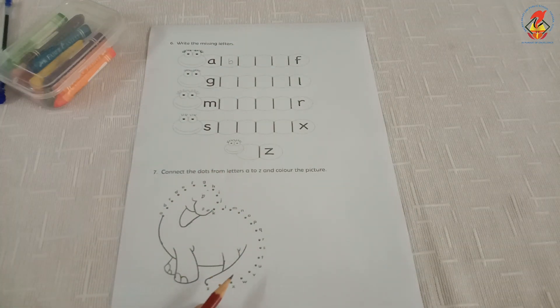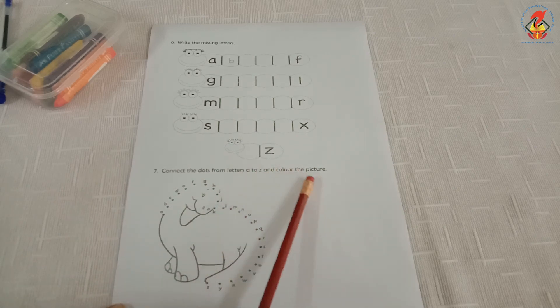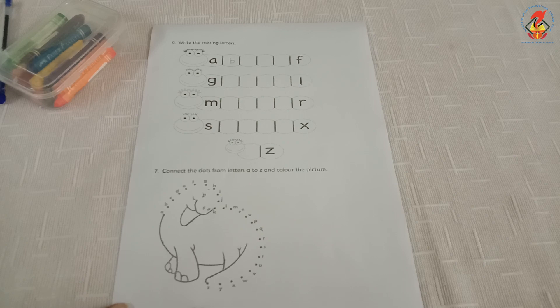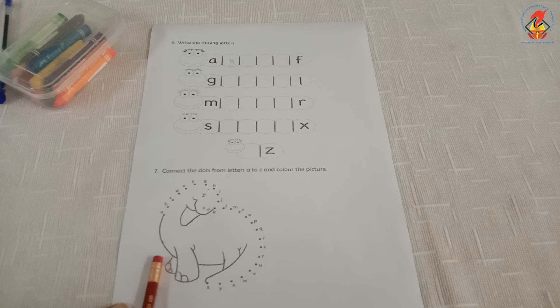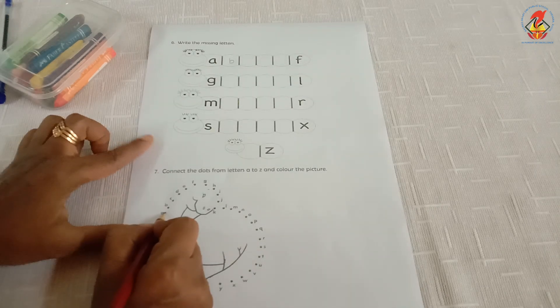The last question is, connect the dots from letters A to Z and color the picture. You can see some dots and letters here. In order to get the complete picture, you have to connect the dots from letter A to letter Z. You have to do like this slowly.